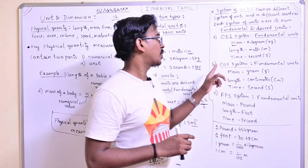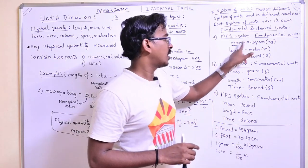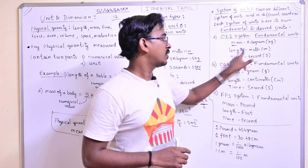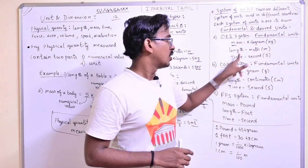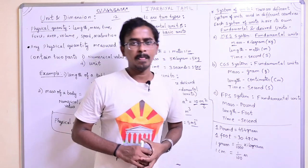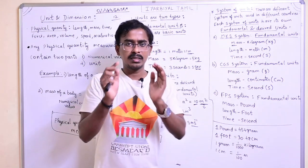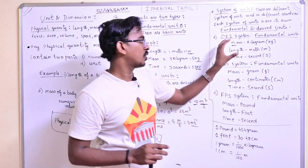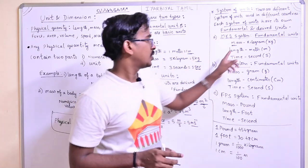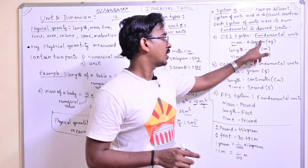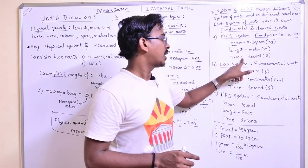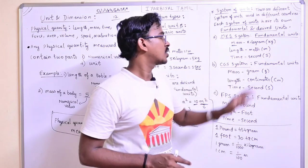The fundamental units in the MKS system are: mass is kilogram, length is meter, time is second. These are the three fundamental units in the MKS system.